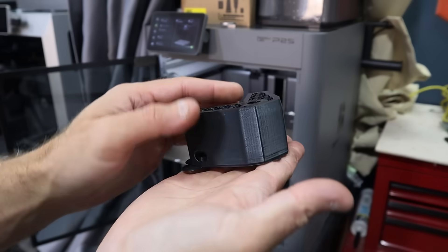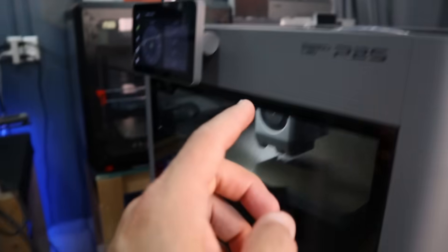After I released the review of the P2S, I had a few comments discussing that this machine actually has worse VFAs than the previous generation. Although I briefly mentioned VFAs in my video and how they were tied to the belt tooth spacing, and I showed an example of my print results, I didn't actually do an apples to apples comparison between the X1C and the P2S. And that's really the only way we're going to be able to know for sure if the VFAs are worse.